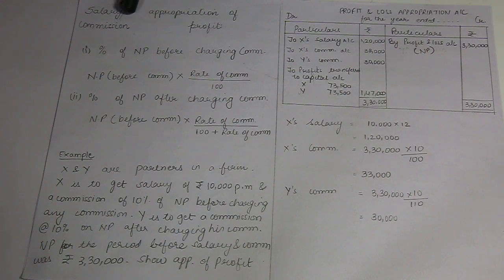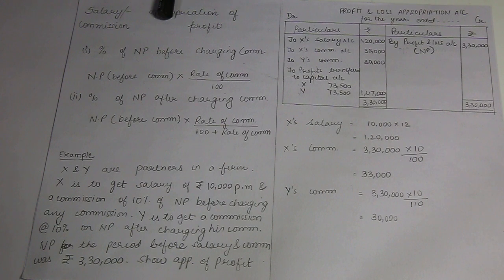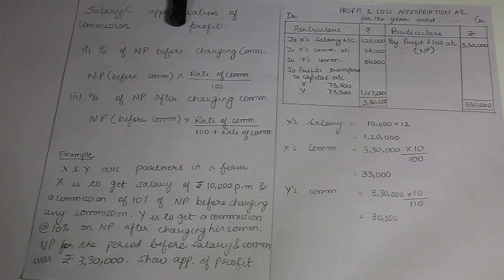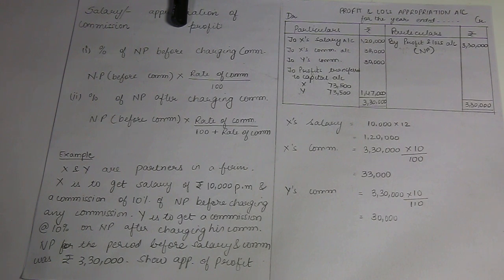Salary can be given in two ways. If salary is given per month — suppose X is given a salary of Rs. 10,000 per month — then for yearly conversion, 10,000 into 12 equals Rs. 1,20,000. This will be debited to the profit and loss appropriation account and credited to the partner. So P&L appropriation account will be debited with 10,000, and X's capital account will be credited with 10,000.